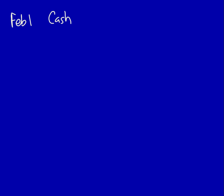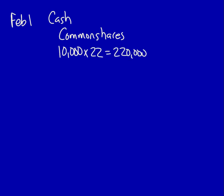Let's start with February 1st. I sold 10,000 common shares — I got cash, and I gave away ownership in the company represented by common shares. The value: 10,000 times $22, meaning I received $220,000 and gave up ownership worth the same amount. I'm going to immediately update my T-accounts.